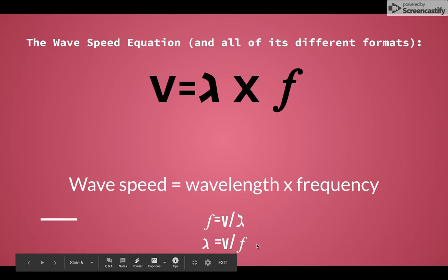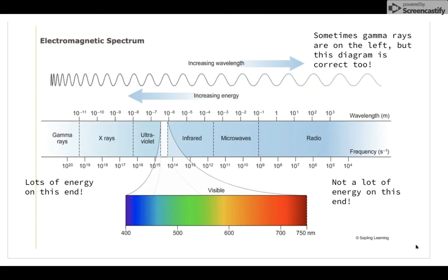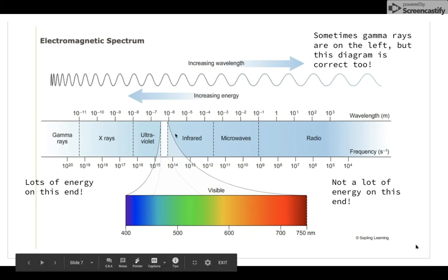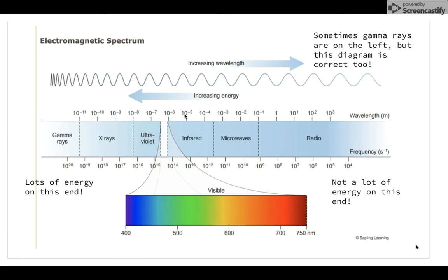So if you went back to the electromagnetic spectrum diagram and you looked at infrared light, which has a wavelength of about 10 to the negative 5 meters, and if you multiplied that by its frequency, which is 10 to the 13 hertz, you'd get a wave speed of around, you guessed it, 300 million meters per second. Why? Because every wave on this diagram has a speed of 300 million meters per second.